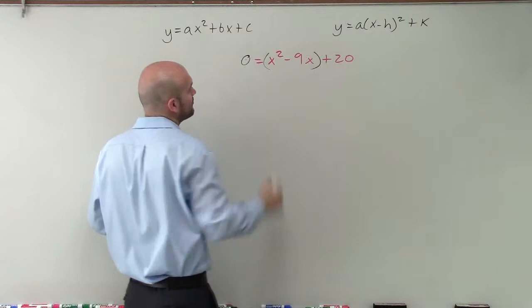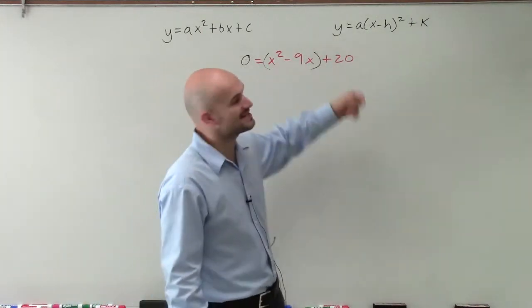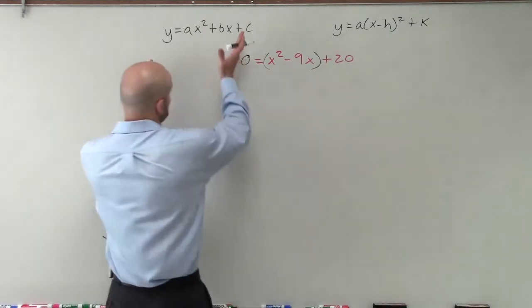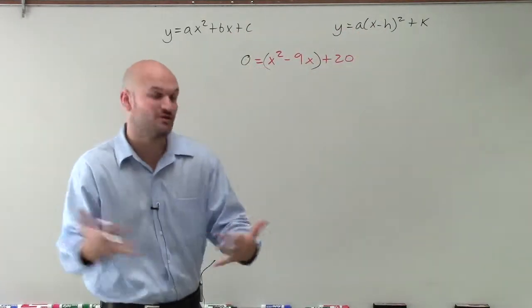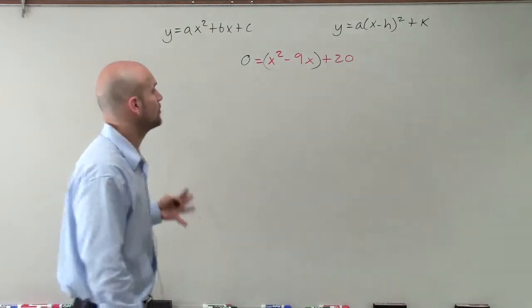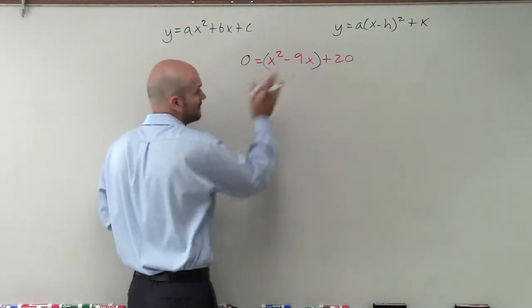And then we're going to want to make sure we put in parentheses because x squared minus 9x plus 20 is not a perfect square trinomial. And remember, when completing the square to go from standard to our vertex, we have to have a perfect square trinomial that we can factor down to a binomial squared. So what we're going to do is we need to create our perfect square trinomial.